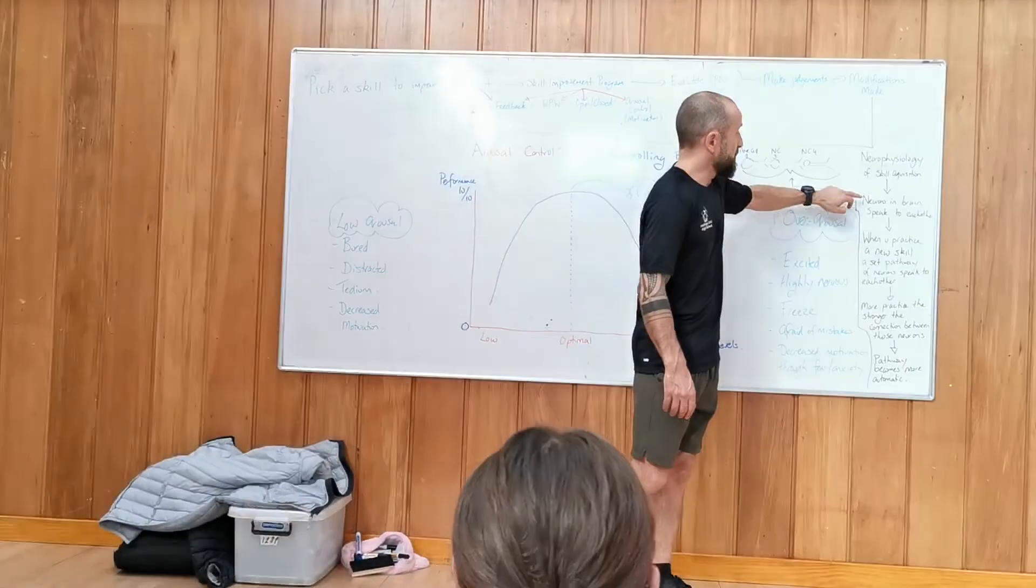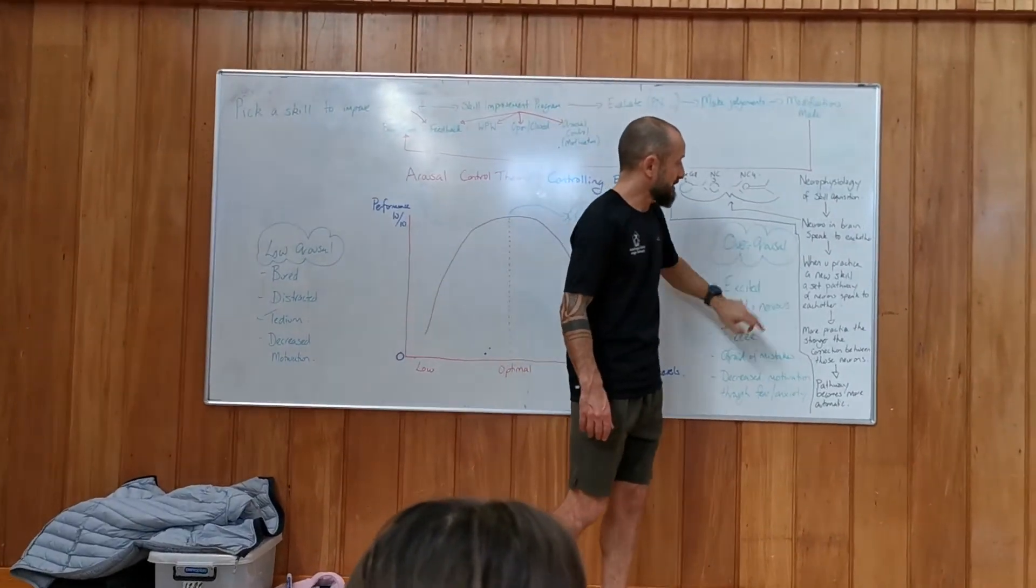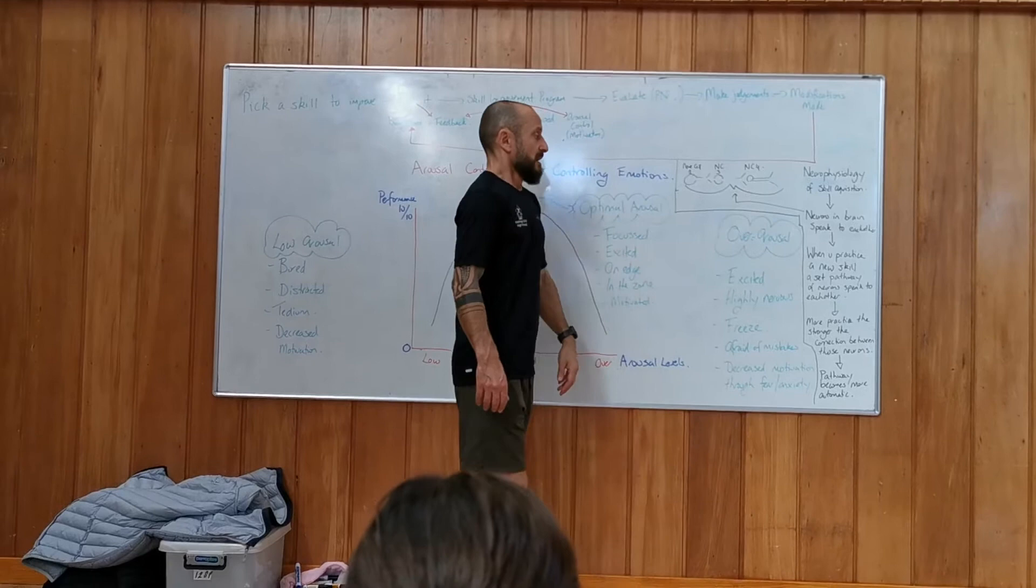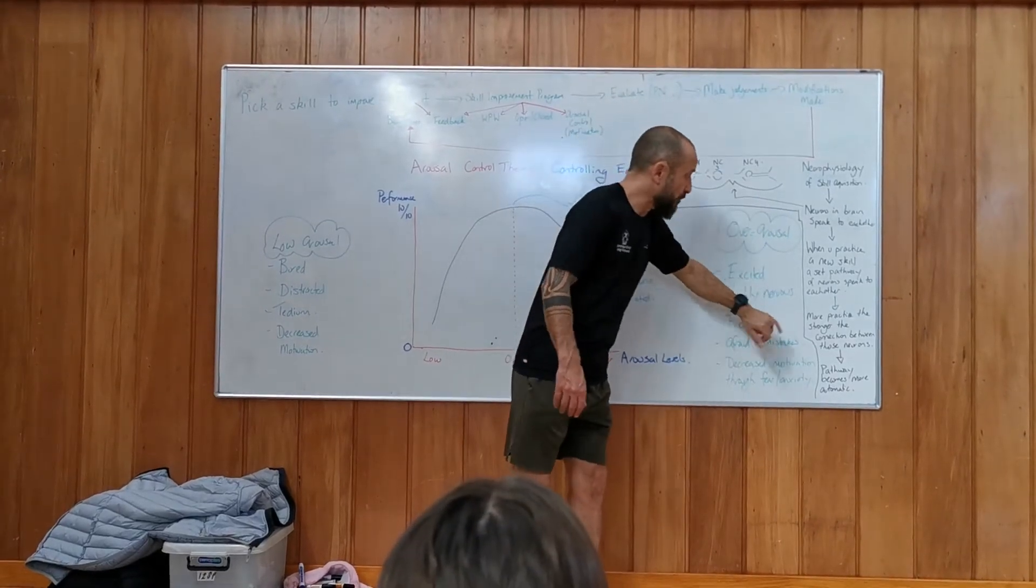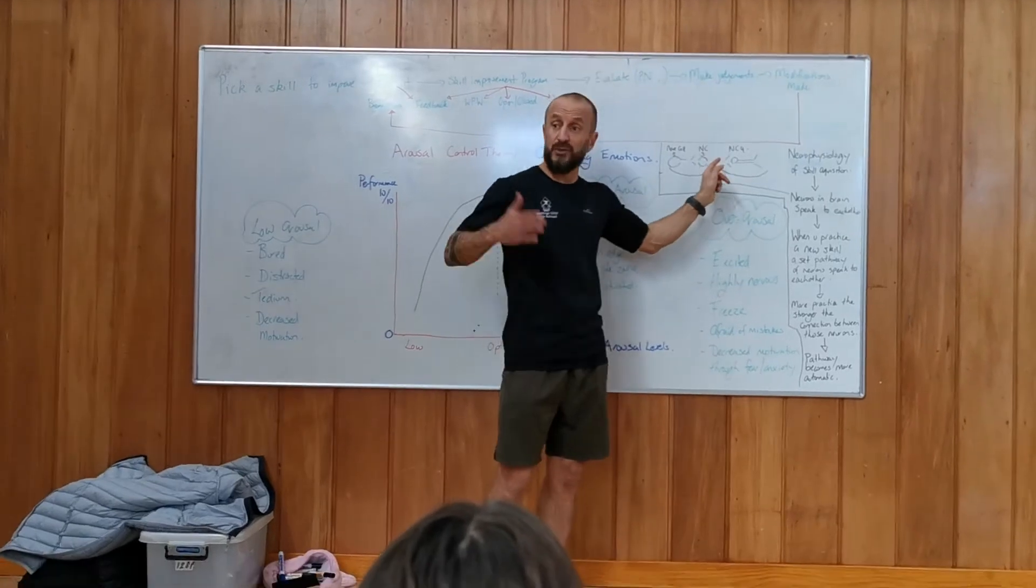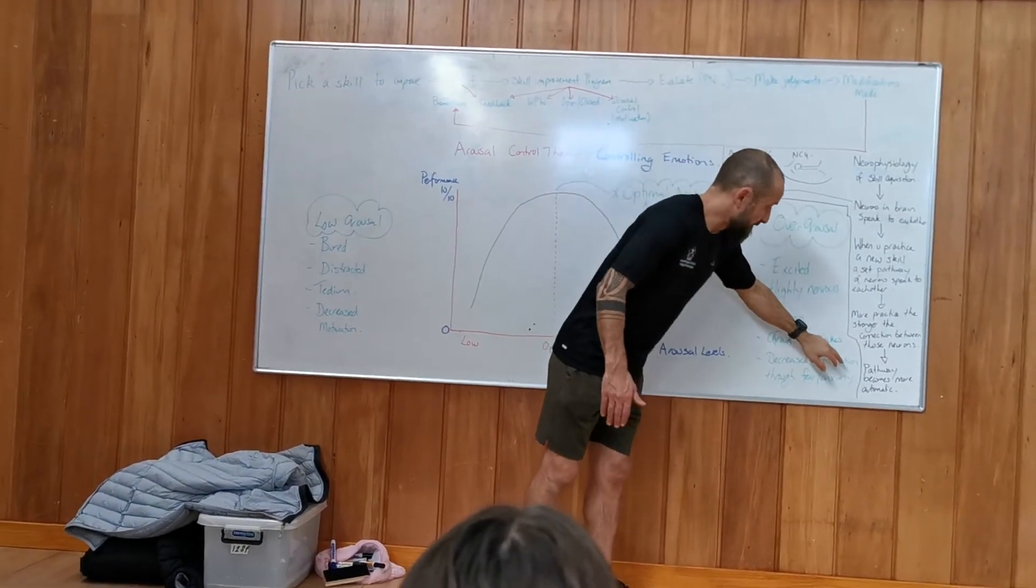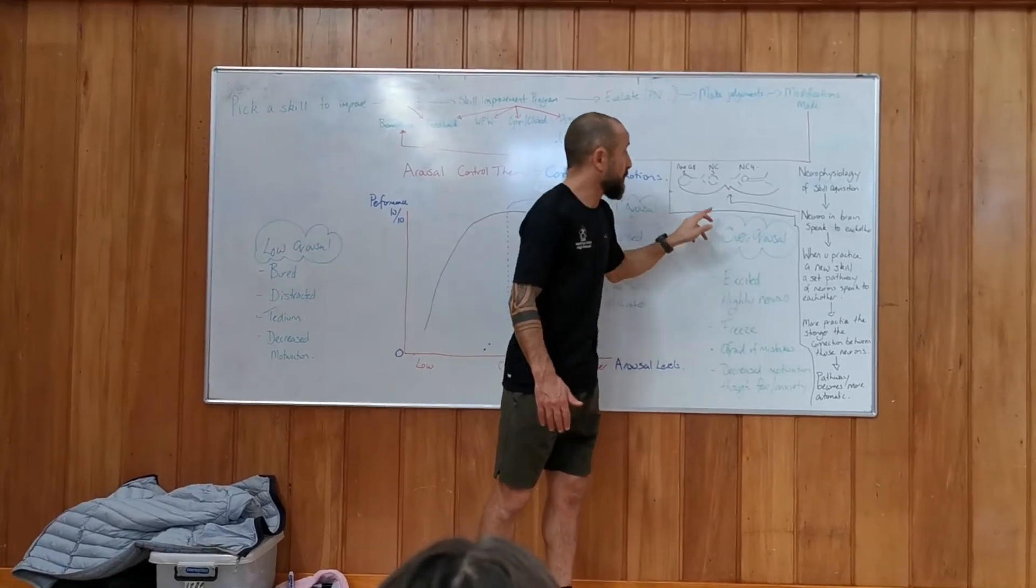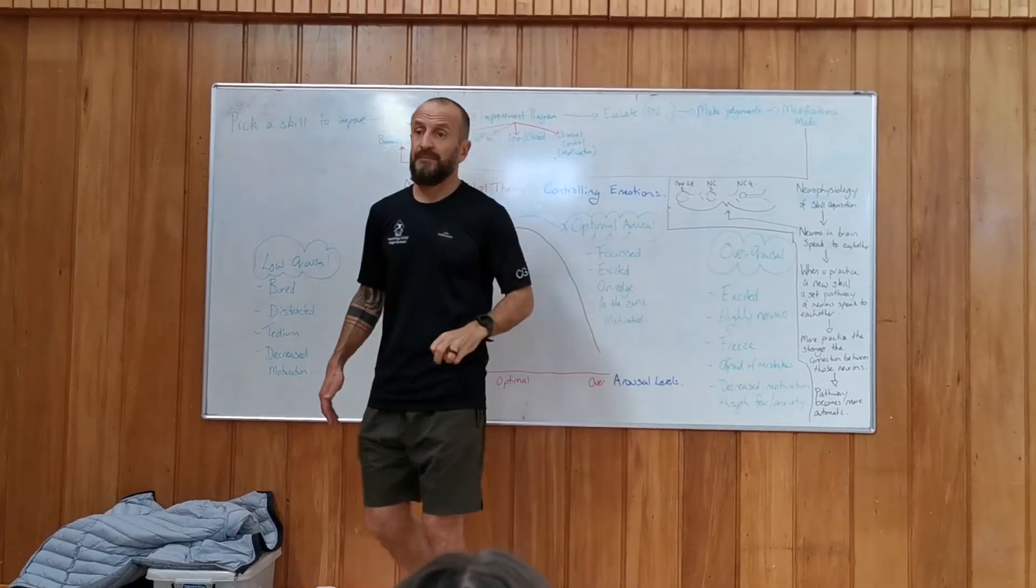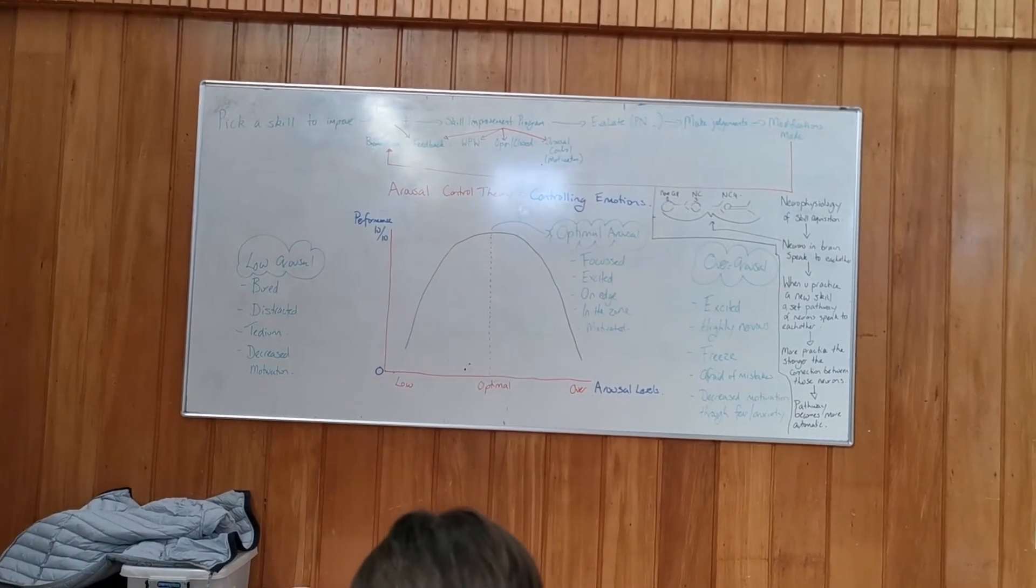So, essentially what happens is your neurons in the brain speak to each other when you're learning a new skill. When you practice that new skill, they speak to each other. And the more practice you do, the stronger the connection between those cells become and the stronger the pathway. And then, basically, it gets to the point where that pathway becomes automatic. So, your brain, that pathway is so strong, it just happens automatically.